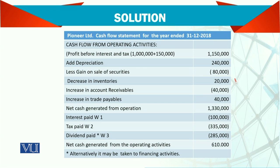Then we have decrease in inventory — decrease in inventory means you have sold inventory and you received the money. Then increase in accounts receivable — it looks as if we have given the money, but actually we have supplied them goods and services, which is as good as money. Then we have increase in trade payables.